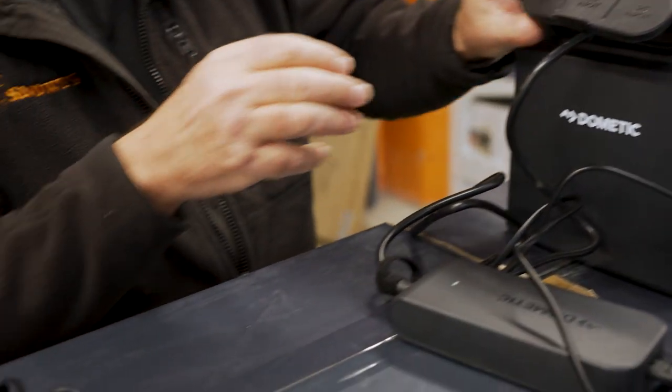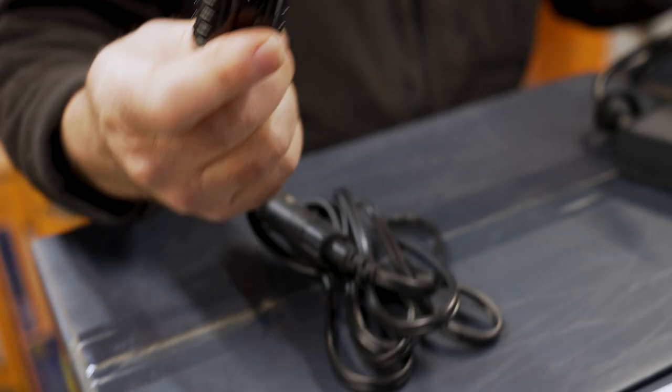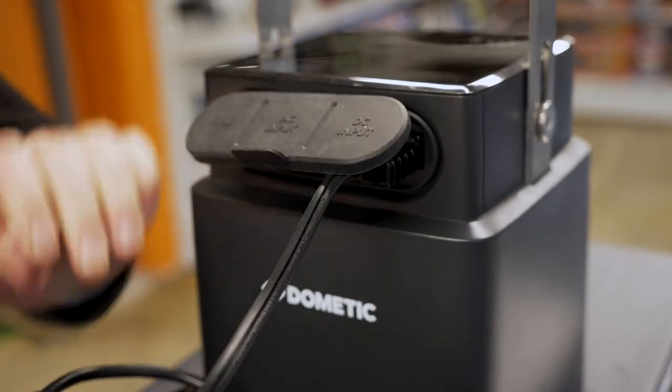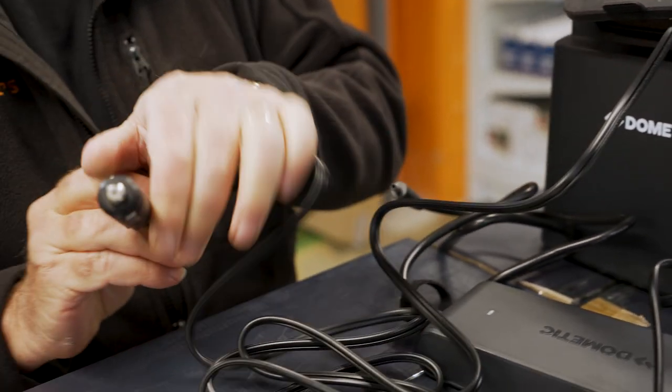If you're going to use a 12-volt socket, you would unplug that and use your Anderson plug. This goes into the plug there, and that goes into the cigarette lighter socket of your car.